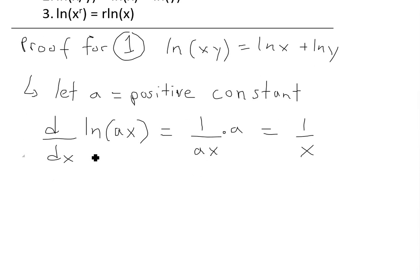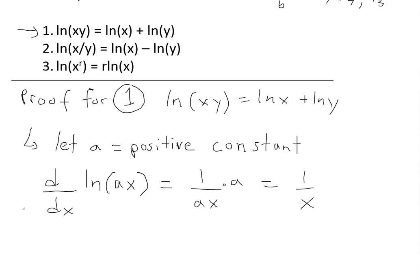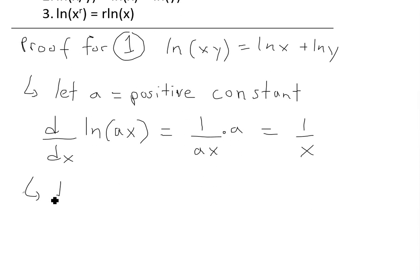So what this is saying is that, well, if this derivative is 1 over x, because we know that the derivative d/dx of ln(x) is equal to 1 over x. So these are the same exact derivative, and the only way that they're the same derivative is if these functions are separated by a constant.